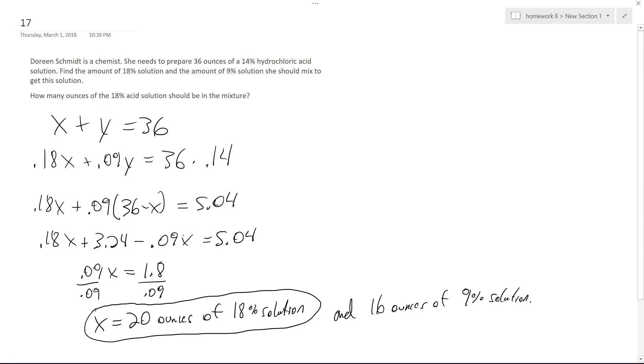So I solve here until I get X by itself, and I divide through by the coefficient 0.09, which gives me 20 ounces of the 18% solution. So ultimately, that's what they asked for, but all you have to do to get the remainder of the 9% solution is take 36 minus 20, and you'll get 16 ounces.